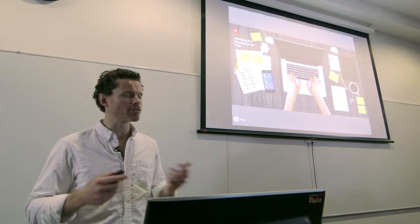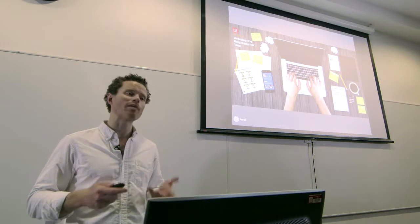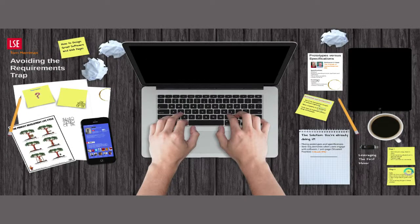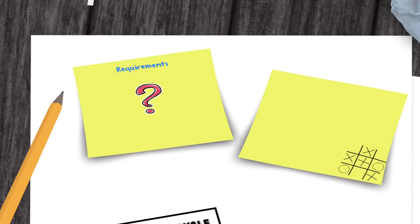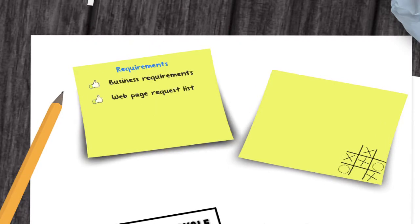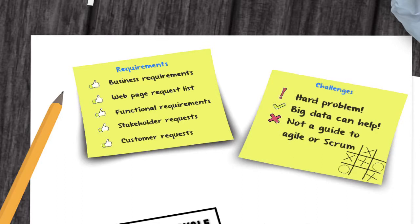Chances are, whilst you're watching this, sitting on your desk somewhere, perhaps peering at you out of your to-do list is an item that says 'requirements' — you might know it as business requirements, functional requirements, or a web page request list. There's a number of different names for it, but it's all about designing new software and web pages. This is a very hard problem. In fact, some of those problems are, as we'll see, unsolvable. I'm going to tell you why those problems are there, and also about some big data techniques that can help.